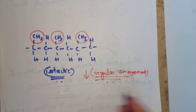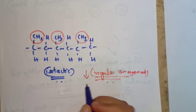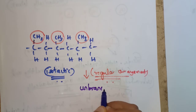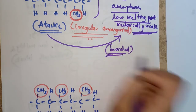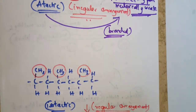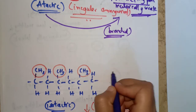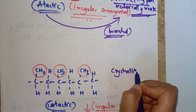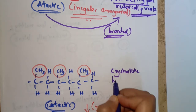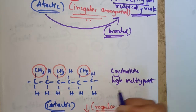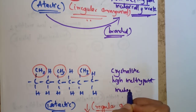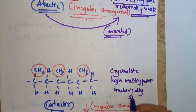Isotactic polymers have a regular arrangement of side groups and are unbranched. This regular unbranched arrangement makes them crystalline, not amorphous. They have a high melting point and are mechanically strong.